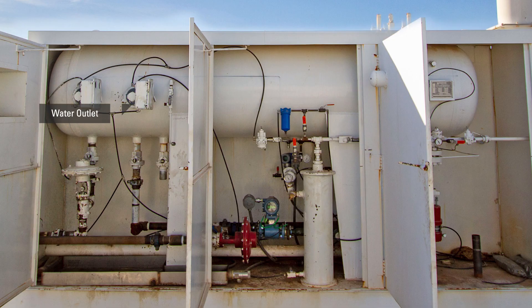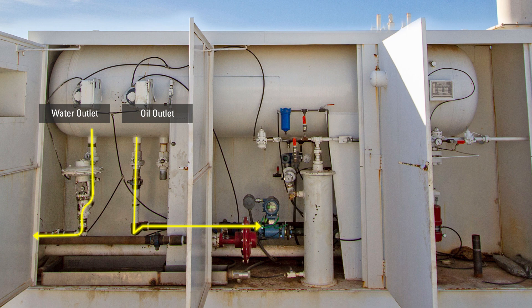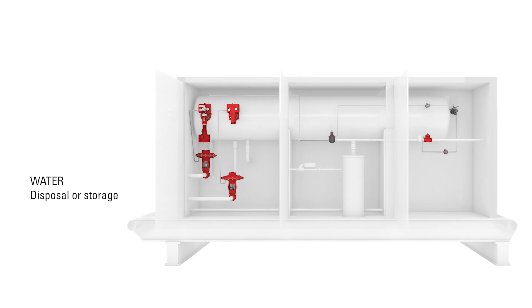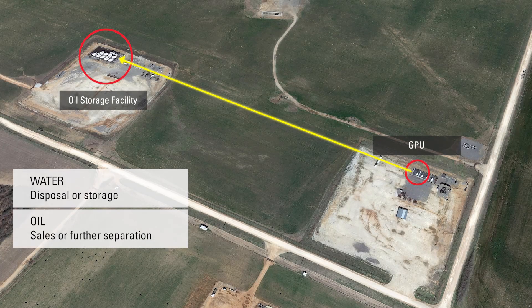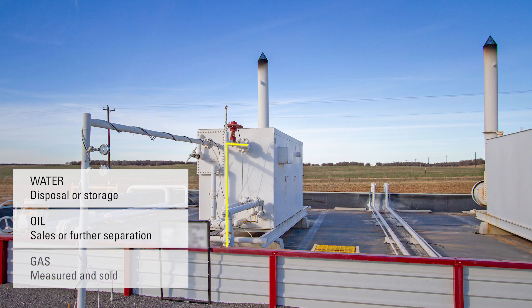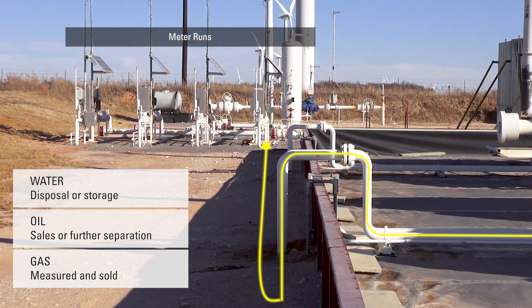Each of the separated components of the well stream will then go to storage, pipeline, or more separation equipment. In a three-phase vessel, the water will go to disposal or storage. The oil will either go to sales or continue to another vessel for further separation, and the gas will go to a meter run where it is measured and sold.